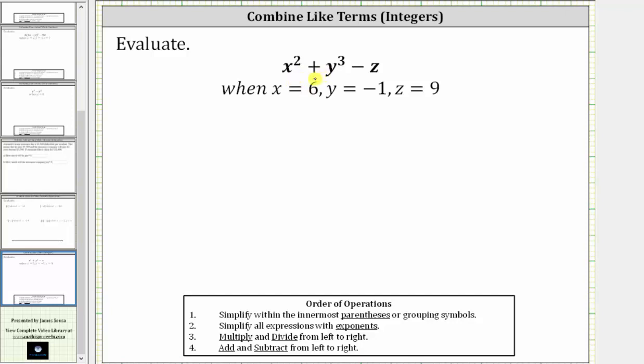We want to evaluate the expression x squared plus y cubed minus z, when x equals six, y equals negative one, and z equals nine.